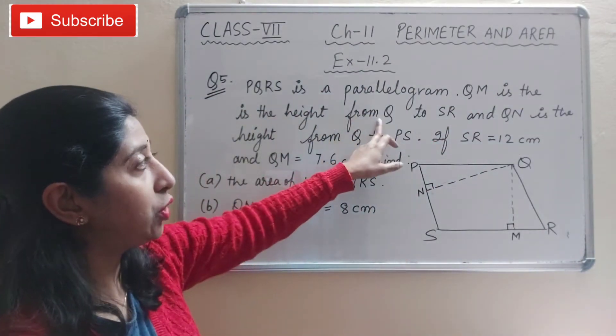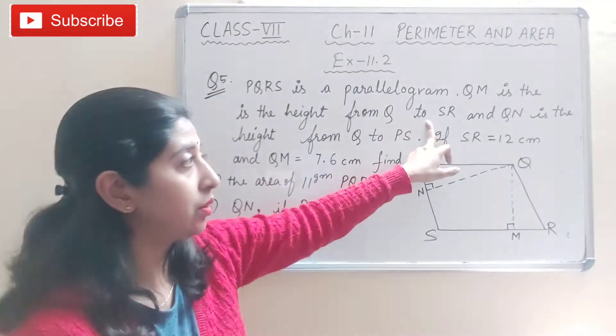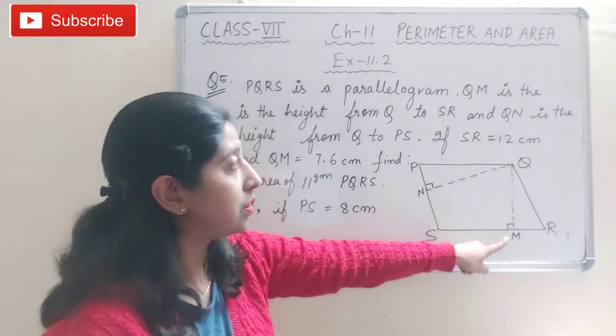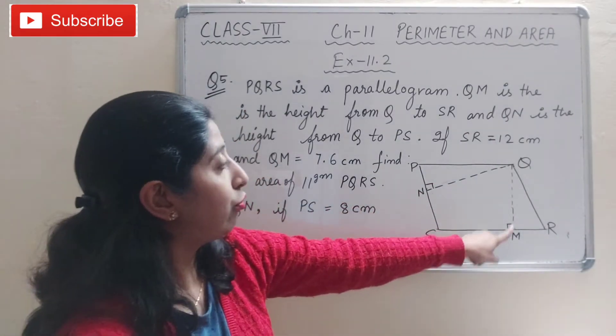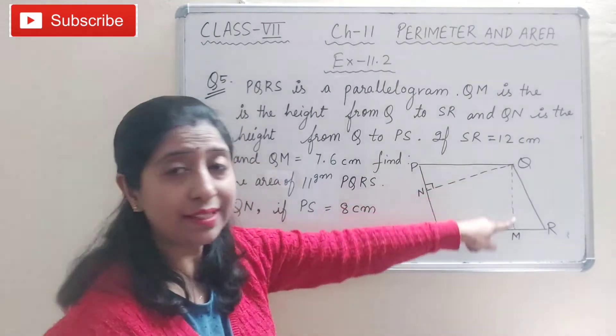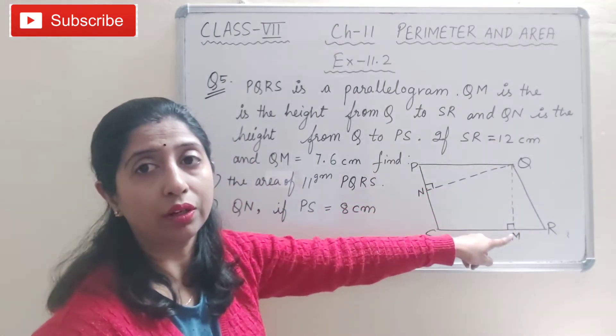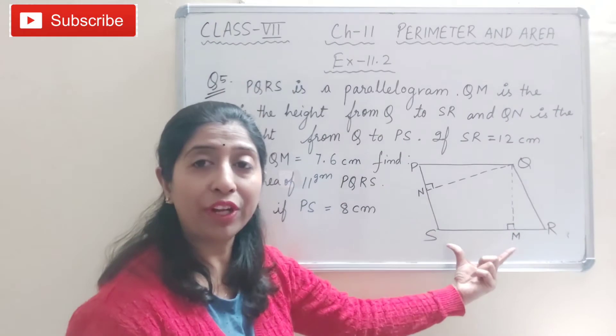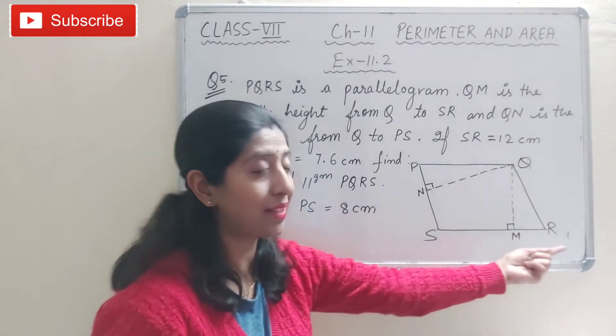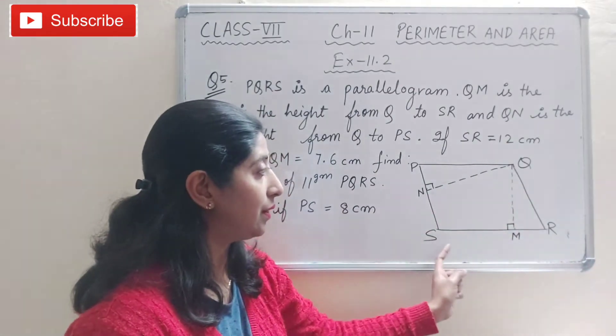Here it is given that QM is the height from point Q. Why is it the height? Because it is perpendicular on side SR. So QM is the height and SR is the base.